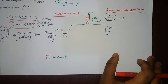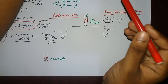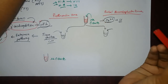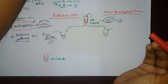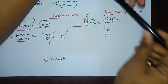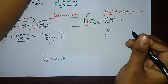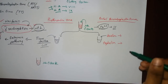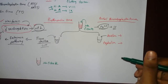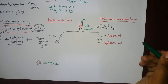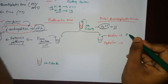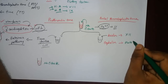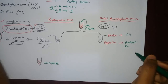Now let's look at partial thromboplastin time. The procedure is similar: we take a test tube, add blood, add sodium citrate, centrifuge, and take the plasma into another test tube. Then we add kaolin and cephalin. Kaolin and cephalin are intrinsic pathway activators — kaolin activates factor 12, and cephalin activates platelet phospholipid.